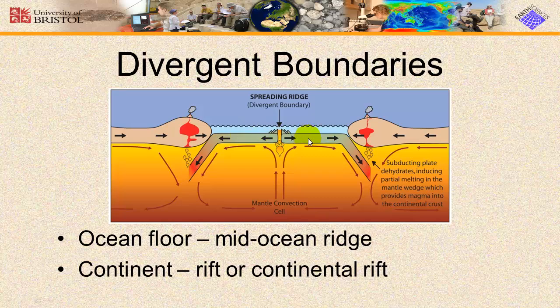That's the Earth feature that we can see. When a divergent boundary is on a continent, a rift or a continental rift is formed — and again, that's the Earth feature that we see. There are continental rifts in Africa and in Central America, and mid-ocean ridges run down the center of all of Earth's oceans.